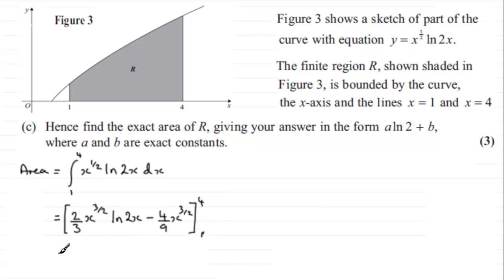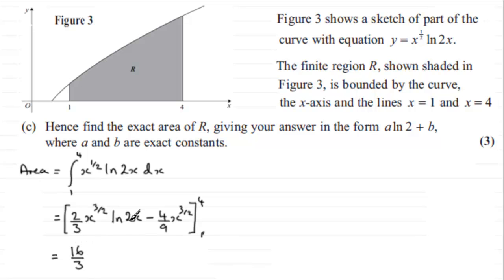Substituting x = 4: 4 to the power 3/2 means we take the square root of 4, which is 2, then cube it to get 8, then multiply by 2/3 to get 16/3. And then we have the natural log of 2 times 4, in other words the natural log of 8.